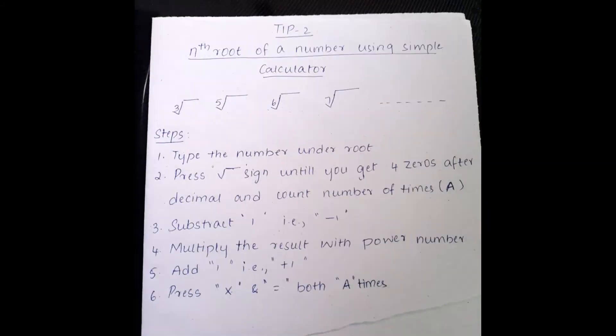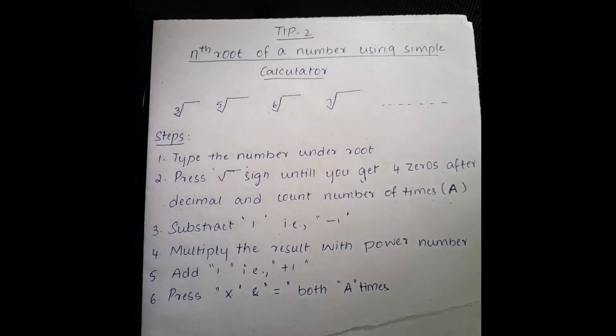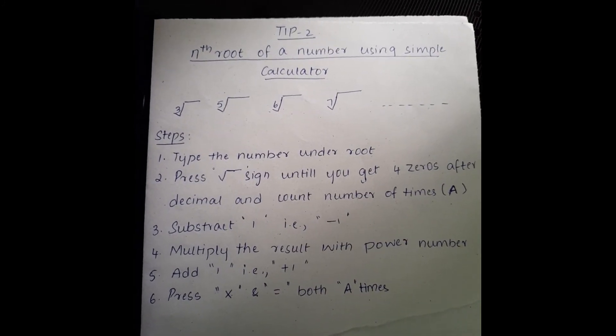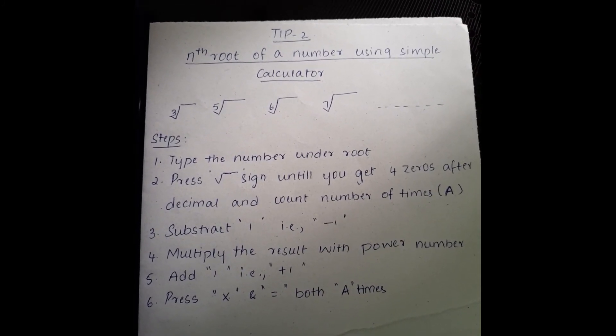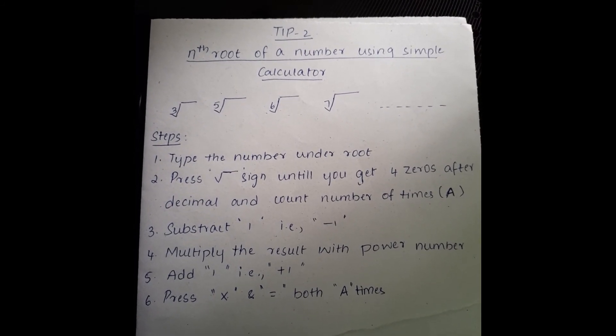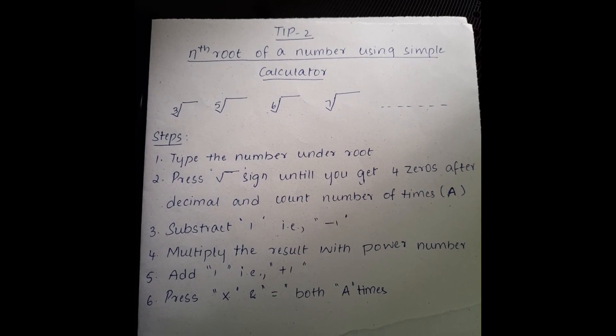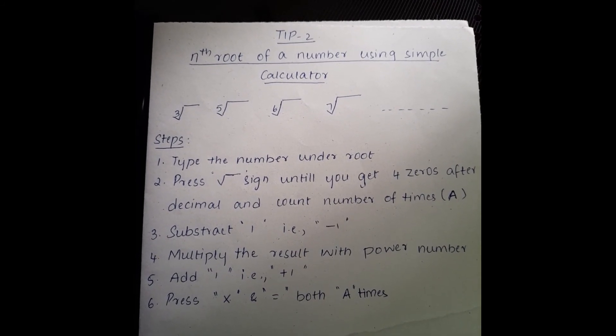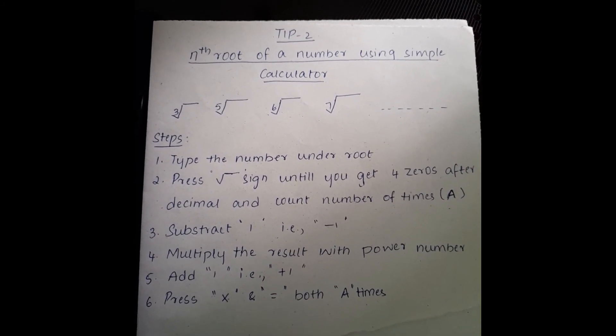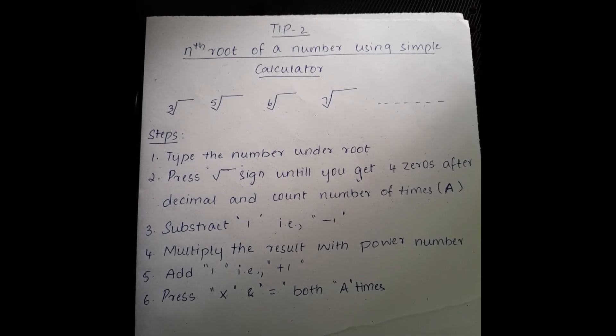And in the second step, press root sign until you get 4 zeros after decimal. But remember, you should count the number of times you press the root sign. And for our convenience, let's name it as A.